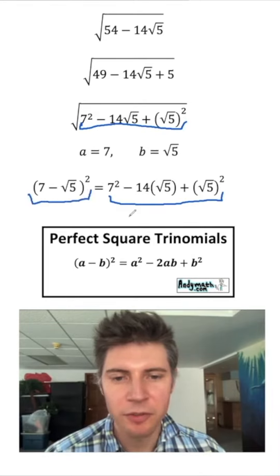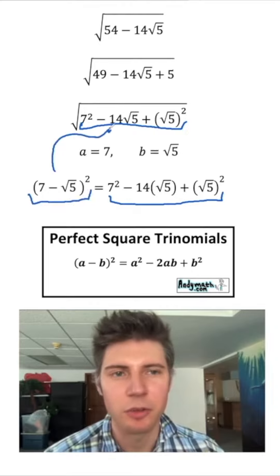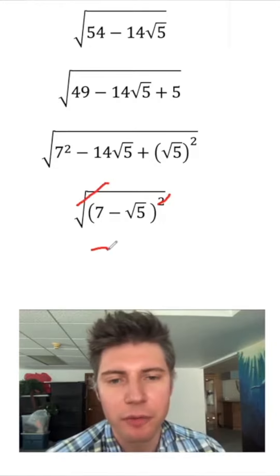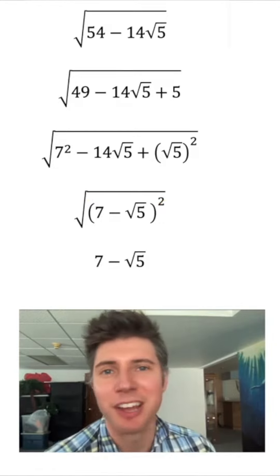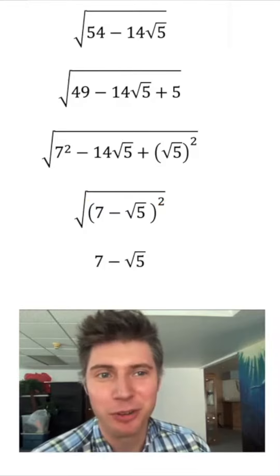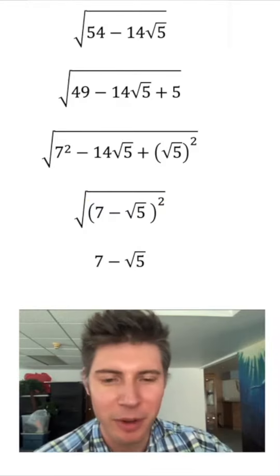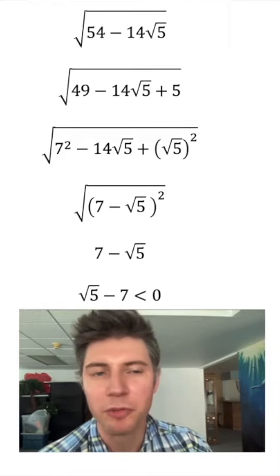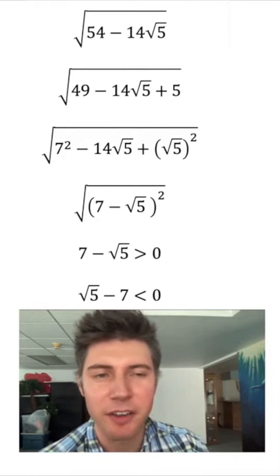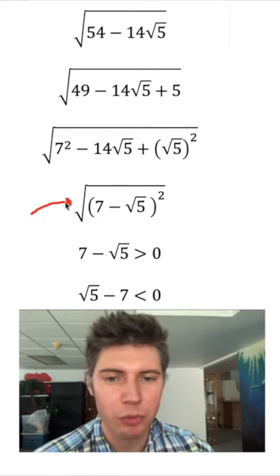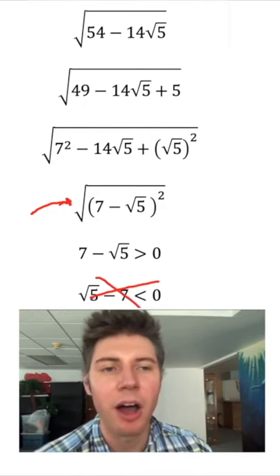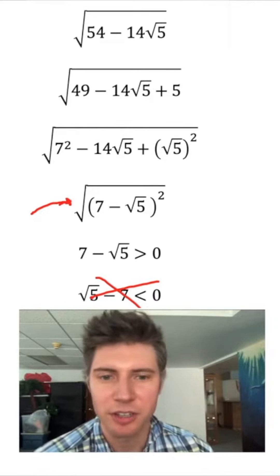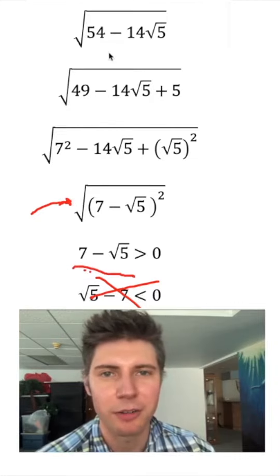Substituting this in for the inside of the square root, the square root symbol and the square cancel each other out, leaving us with just 7 minus root 5. That is the answer. For the rigorous among us: this could also simplify to root 5 minus 7, but root 5 minus 7 is less than 0. When we're talking about square roots, we only count the positive value — values greater than 0. So root 5 minus 7 would not count as a solution; only 7 minus root 5, which is greater than 0.